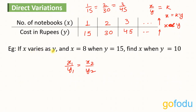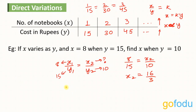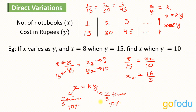X varies directly with Y and X1 is 8, Y1 is 15. We have to find the value of X2 when Y2 is 10. So 8 upon 15 equals X2 upon 10, and X2 comes out to be 16 upon 3. In this relation, X equals K times Y — when X becomes 2 times, Y also becomes 2 times. If Y increases by 10%, X will also increase by 10%.